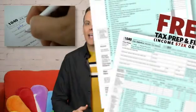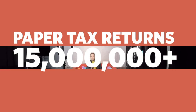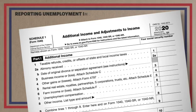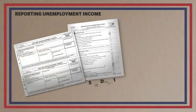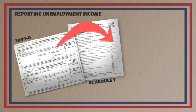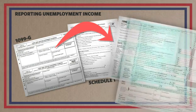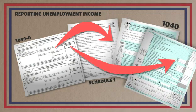If you do your taxes by hand on paper — which more than 15 million people did last year — there's more work than just the standard 1040 form. You'll need to attach Schedule 1 and write your unemployment income on Line 7. Then, if the state deducted federal tax for you, that amount goes on the main 1040 form, Line 25B.